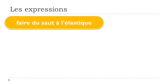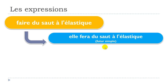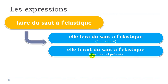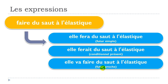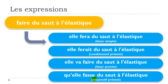Now let's see how it conjugates. At the future simple form: elle fera du saut à l'élastique. Conditionnel présent: elle ferait du saut à l'élastique. Future proche: elle va faire du saut à l'élastique. And subjonctif présent: qu'elle fasse du saut à l'élastique.